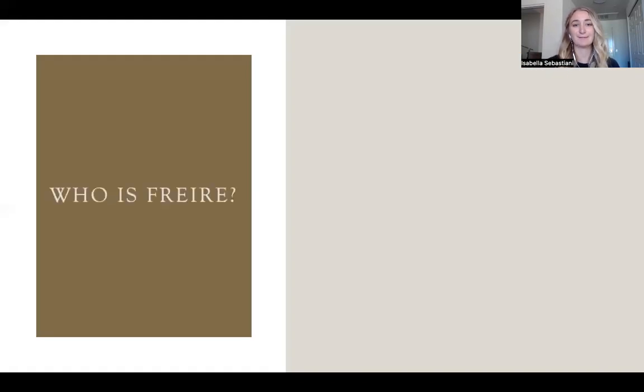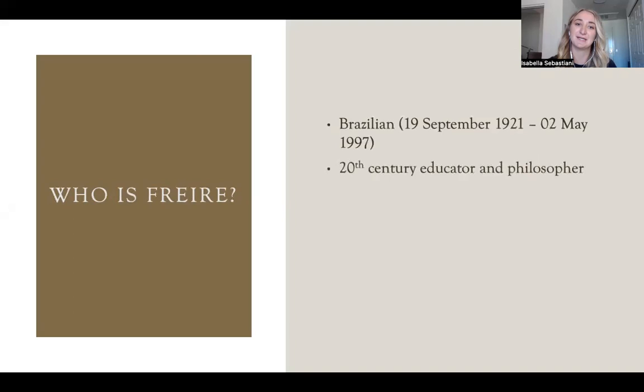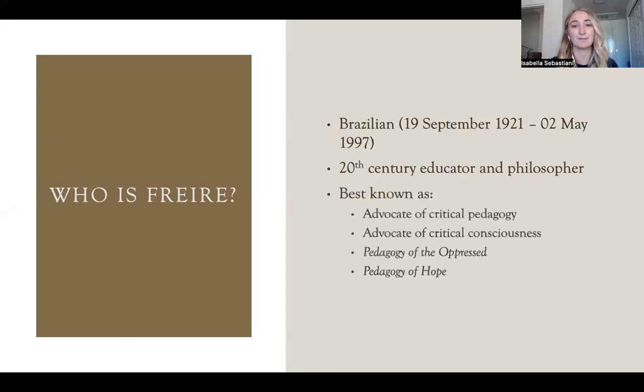Who is Freire? Freire is a 20th century Brazilian educator and philosopher who was born in 1921 and passed away in 1997. Freire is best known as an advocate of critical pedagogy and critical consciousness and the author of the Pedagogy of the Oppressed and Pedagogy of Hope. His main mojo was that educators and learners are mutually responsible for the teaching and learning process.